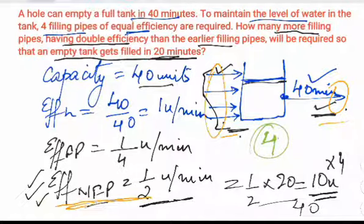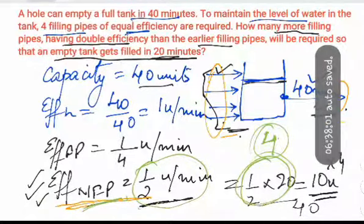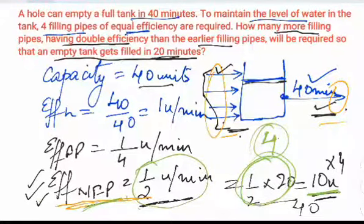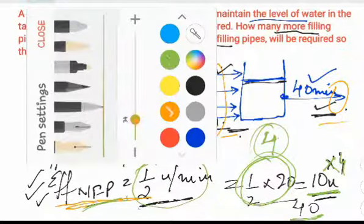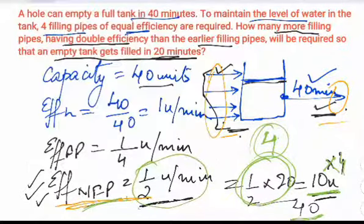The efficiency of one new filling pipe is 1/2 unit per minute, and in 20 minutes one pipe fills 10 units. Since we require 40 units to be filled in 20 minutes, we multiply by four — so the answer is four new filling pipes required.